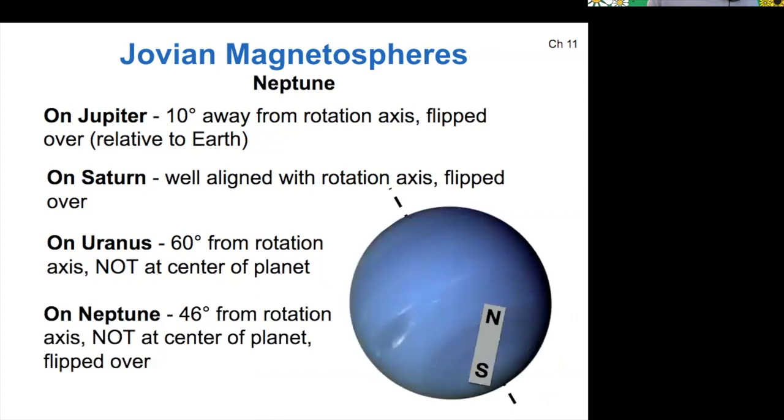Neptune is similar to Uranus in that it's not at the center and it's far from the rotation axis.